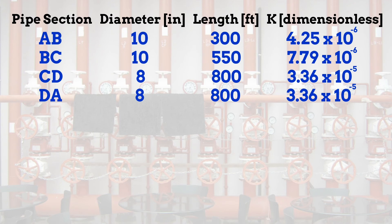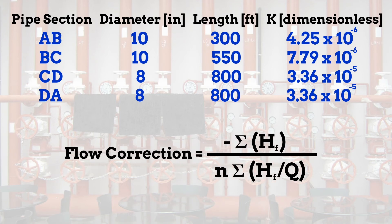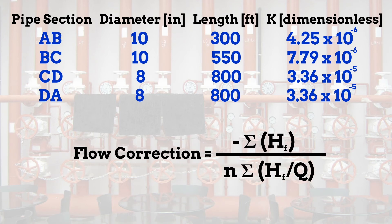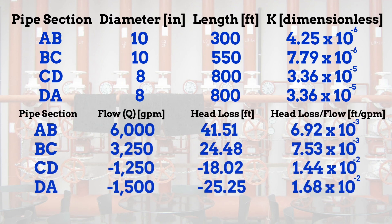Next, we take the current flow of each section of piping and calculate the head loss incurred in each section. The flow correction equation we will use is based on the adjusted Hazen-Williams equation, where n equals 1.85. Flows going clockwise in the system are used as positive values, while flows going counterclockwise are calculated as negative. Therefore, the flows for pipe segments AB and BC will be positive, while flows for CD and DA will be negative. We then find the values for each section of piping and calculate the flow correction.